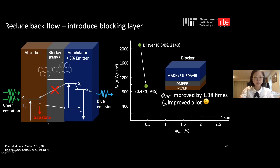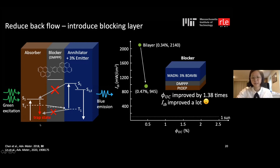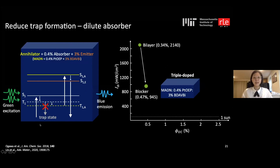Looking at the energy diagram, the improvement comes not only from blocking singlet backflow but also from the blocker's slightly higher triplet energy blocking triplet backflow from the annihilator. Without the blocker, trap states in the absorber could still quench triplet excitons within the annihilator. However, trap state formation itself was still not addressed.